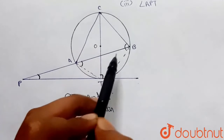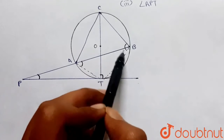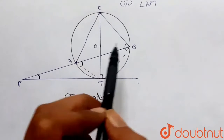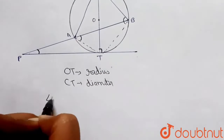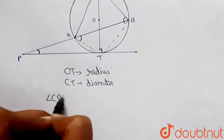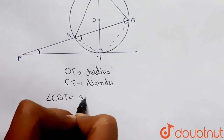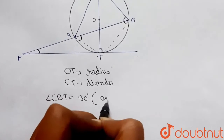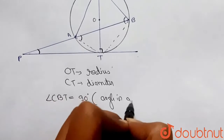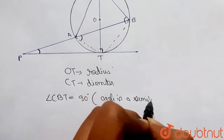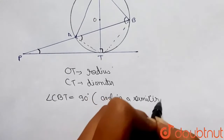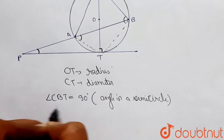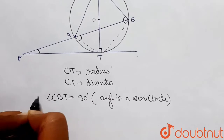Since CT is the diameter of the given circle, angle CBT is an angle in a semicircle. We know that angles in a semicircle are always equal to 90 degrees. So angle CBT must be equal to 90 degrees — that's the first part of our answer.